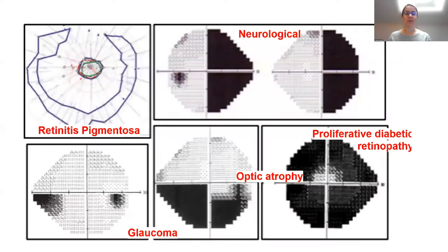Visual field loss occurs in a number of different ocular conditions for a number of different reasons. These can include retinal diseases like retinitis pigmentosa or proliferative diabetic retinopathy. They can include optic nerve-related diseases like optic atrophy and glaucoma, or they can happen due to neurological problems like in patients with hemianopia.